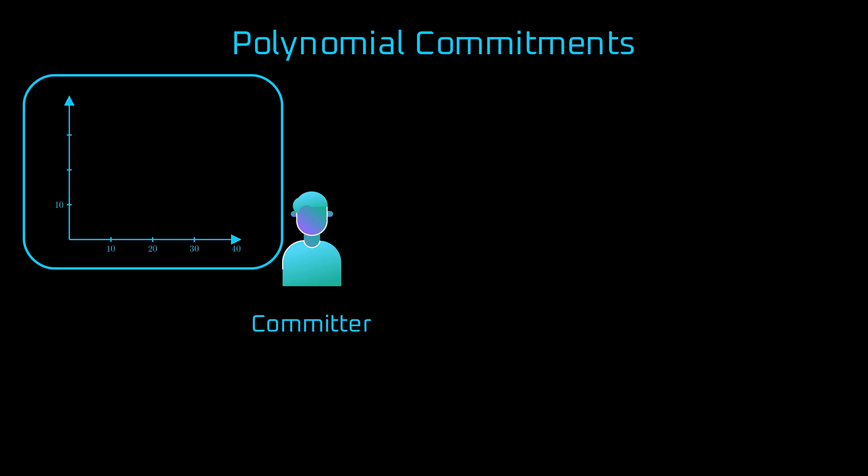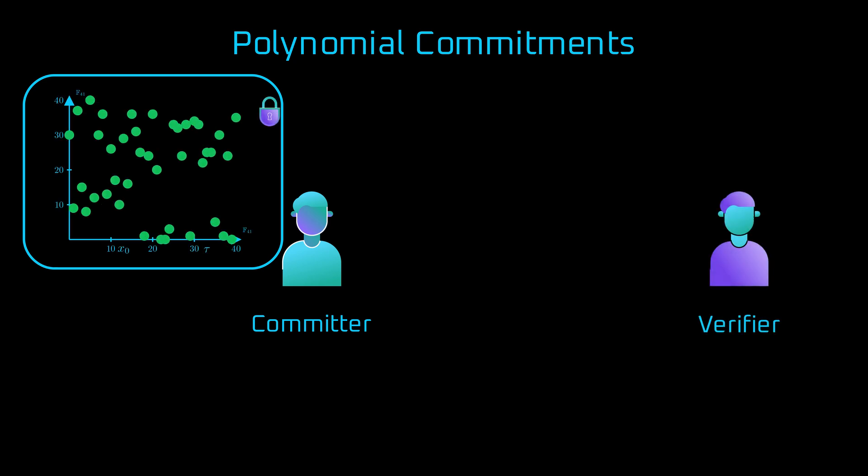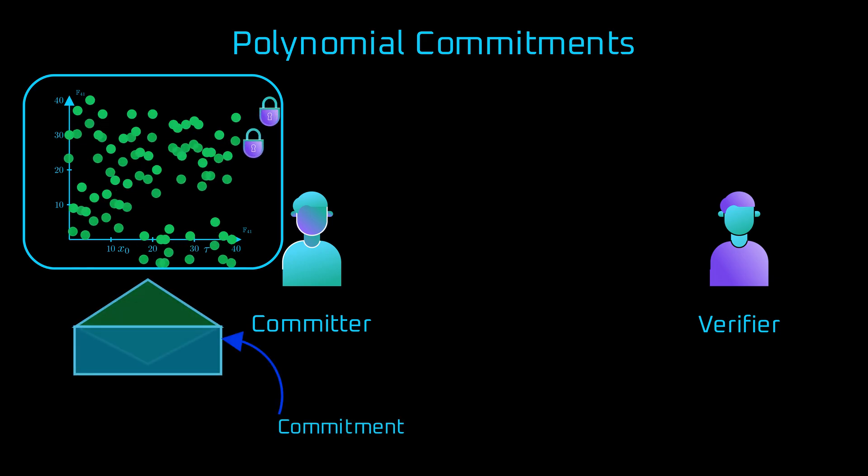So, let's talk about the commitment schemes. In this process, the committer has a polynomial which he doesn't want to reveal, but wants to prove to the verifier that it has specific values. The committer is locked into the polynomial via something called a commitment, which acts like a locked box containing information about the polynomial.